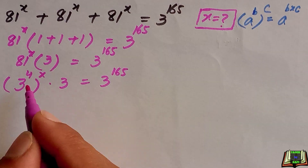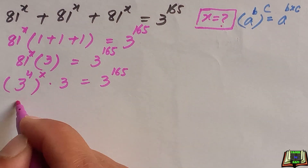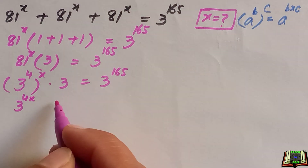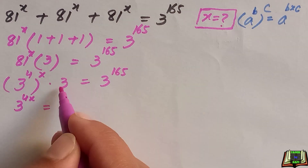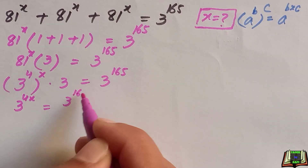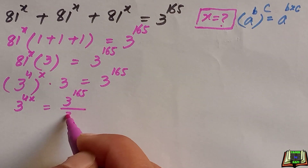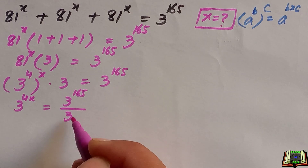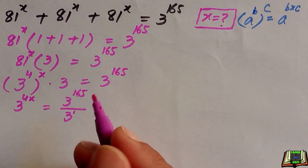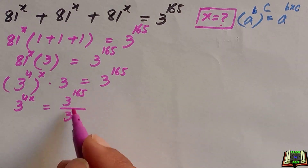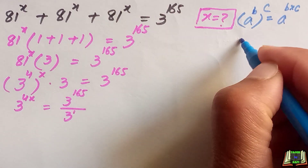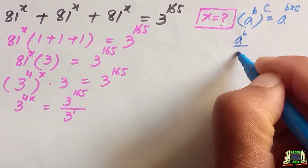Applying the rule, 3 raised to the power 4 times x gives us 3 raised to power 4x, times 3. We then take this 3 to the right-hand side, where it becomes a divisor — and this 3 means 3 raised to the power 1.